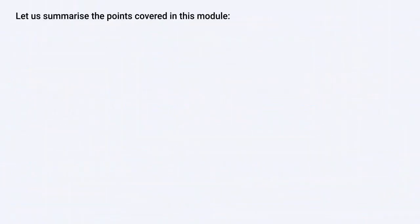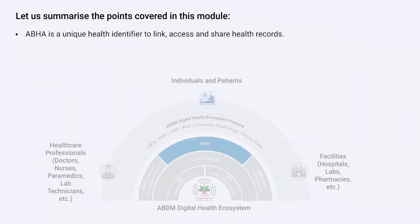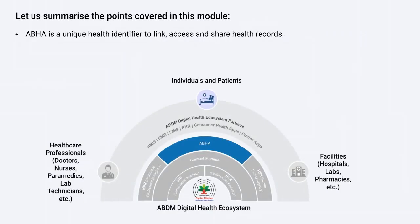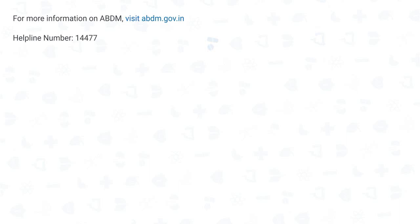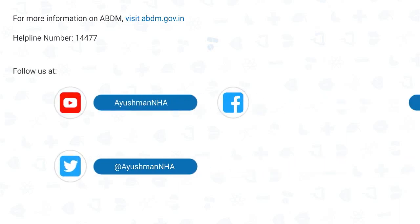Let us summarize the points covered in this module. ABHA is a unique health identifier to link, access, and share health records. It is easy to generate ABHA and start availing the benefits of ABDM. For more information on ABDM, visit the ABDM website and follow us on our social media handles.